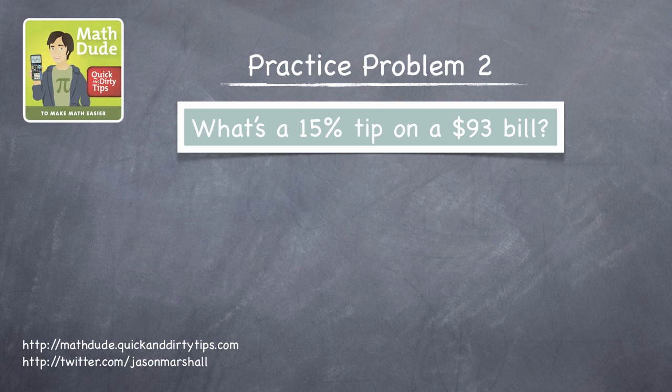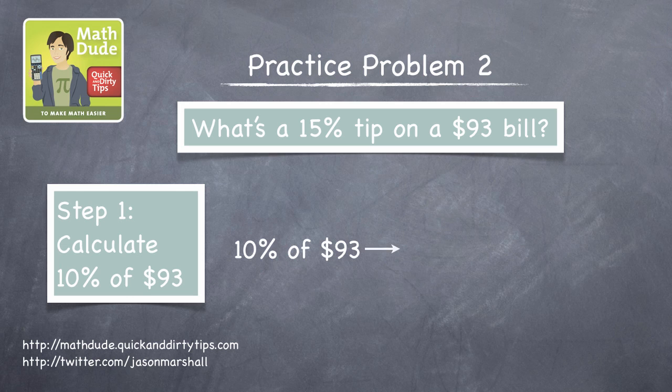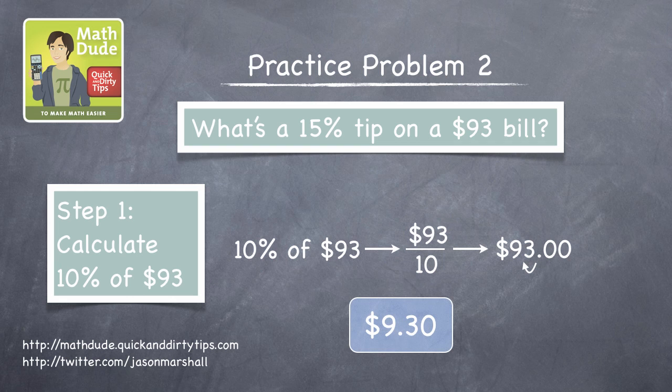How about a 15% tip on a $93 bill? Again, start by calculating 10% of $93. Moving the decimal point one place to the left, it's $9.30.